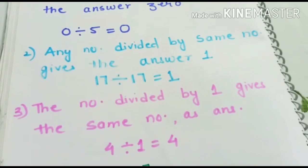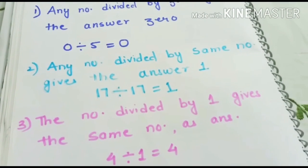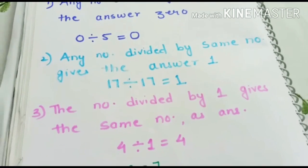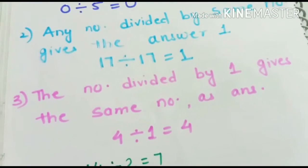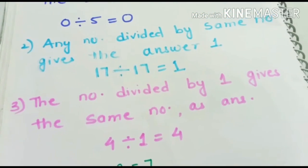Let's see the third fact. The number divided by 1 gives us the same number as answer. For example, 4 divided by 1 equals to 4.